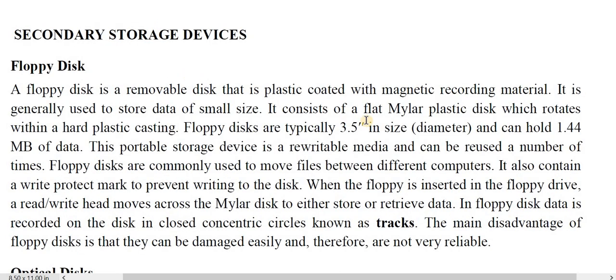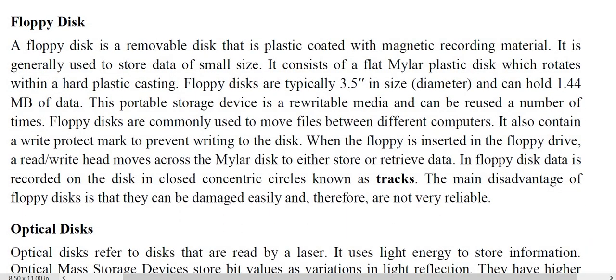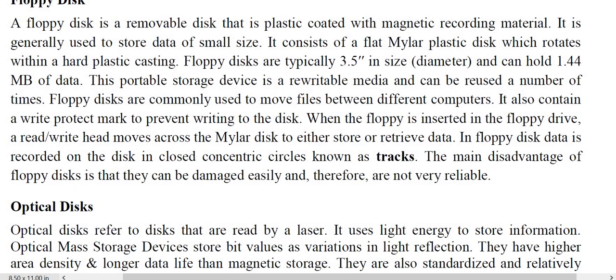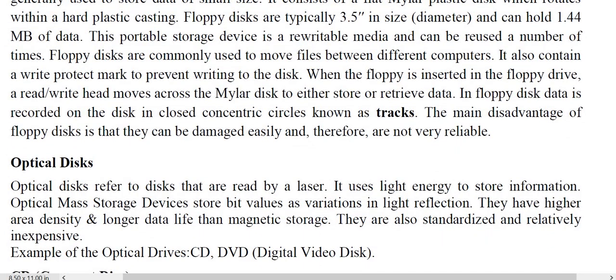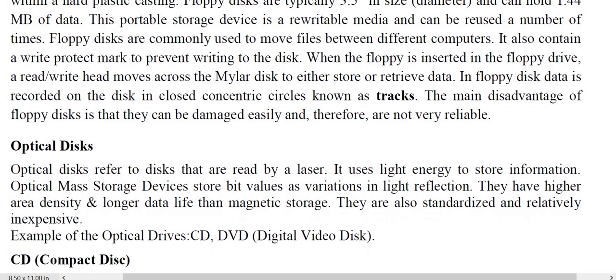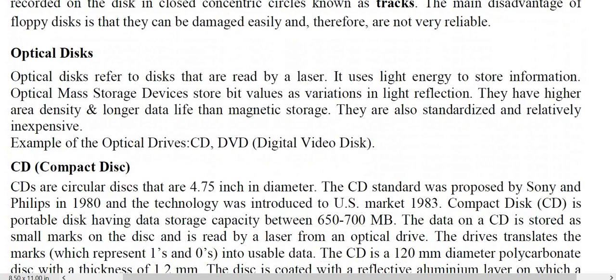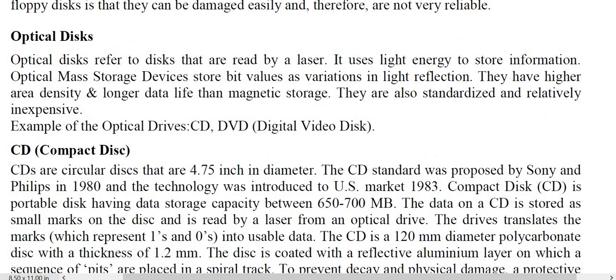Examples of secondary storage devices: Floppy disk was widely used earlier but is now out of service. Its main disadvantage is that it can be damaged easily, making it unreliable. Optical disk refers to disks read using light energy to store information. Examples of optical devices are CD, DVD, and digital video disk.